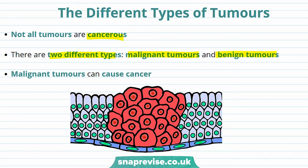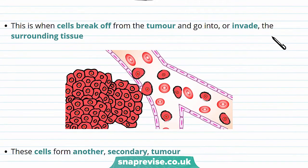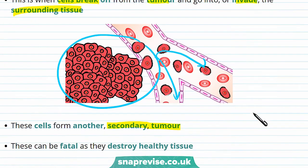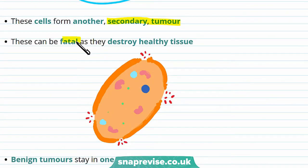Malignant tumours are the ones you have to look out for, as they can cause cancer. With malignant tumours, cells can break off from the tumour and invade the surrounding tissue. These tumour cells travel in the bloodstream all over the body and can form a secondary tumour. If this happens, it can be fatal, as they destroy healthy tissue surrounding the tumour.